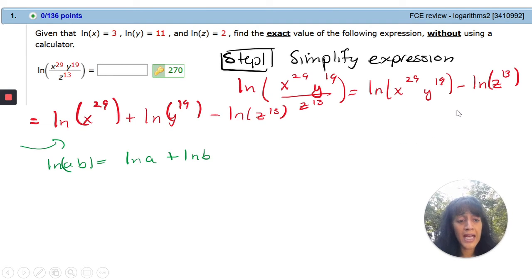Again, you're going to apply it. It's actually the same log law that says that log of a product is the sum of the logs. So the product is in the first term, so they split off as log of X to the 29th plus log of Y to the 19th.